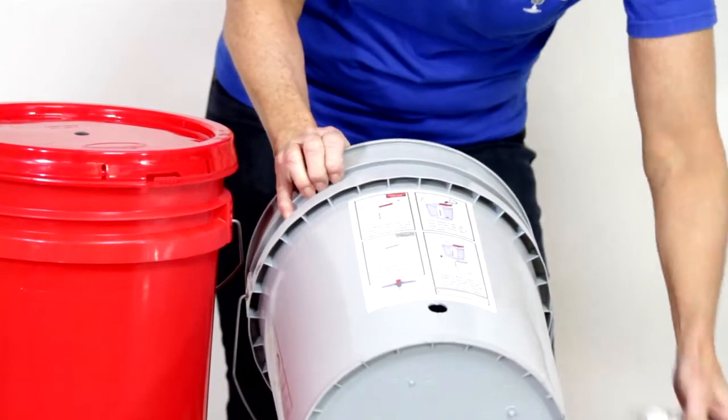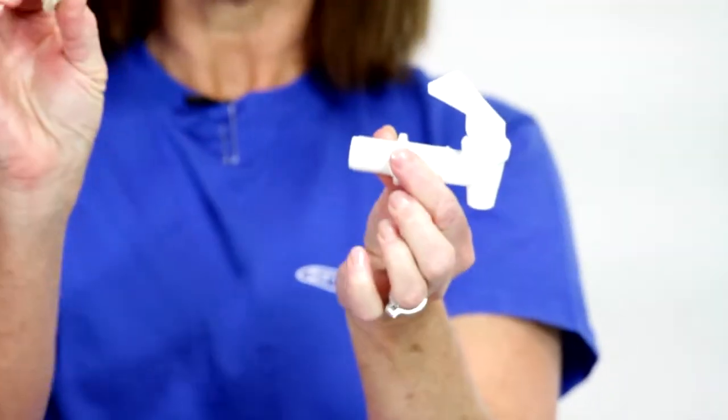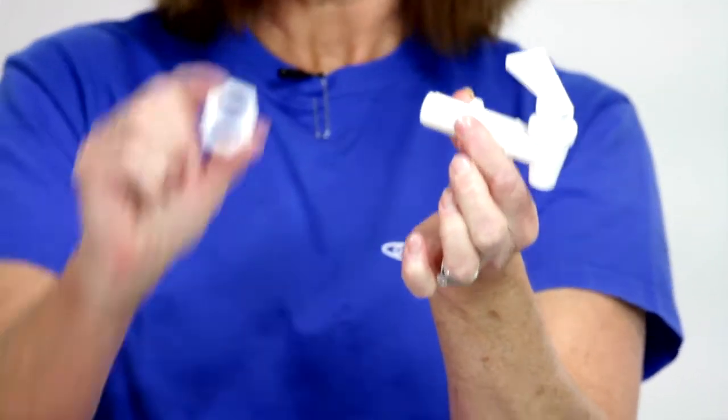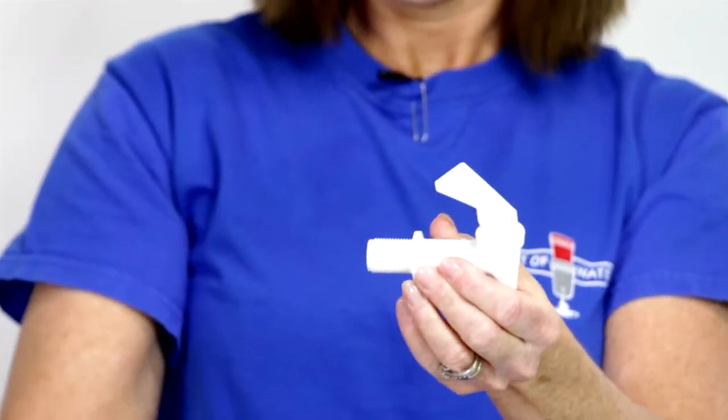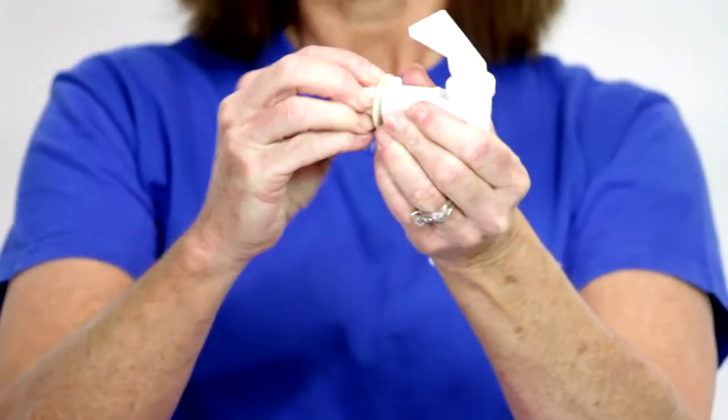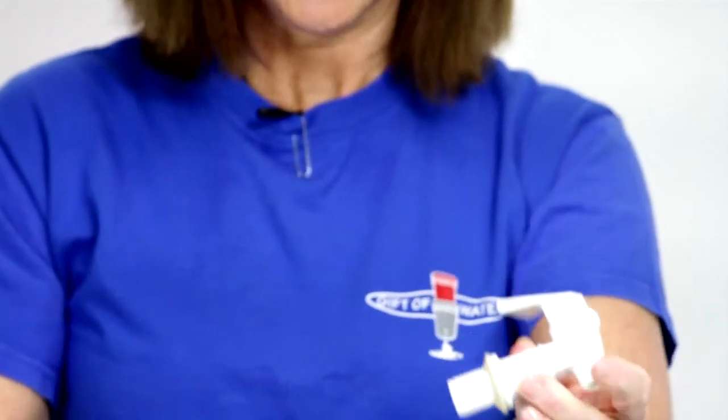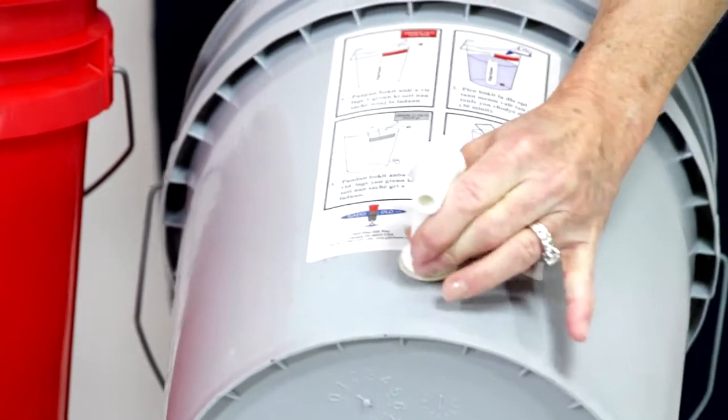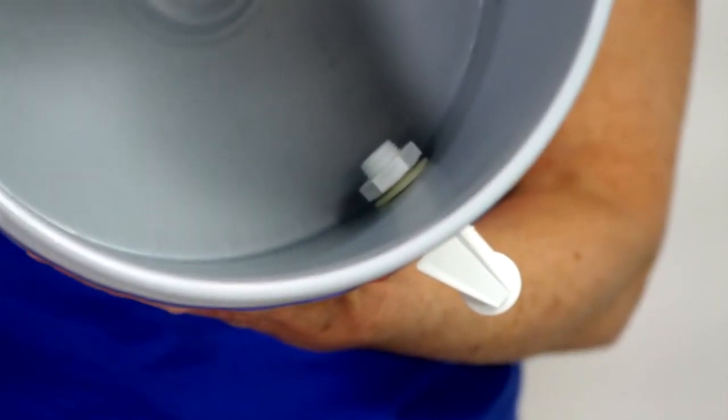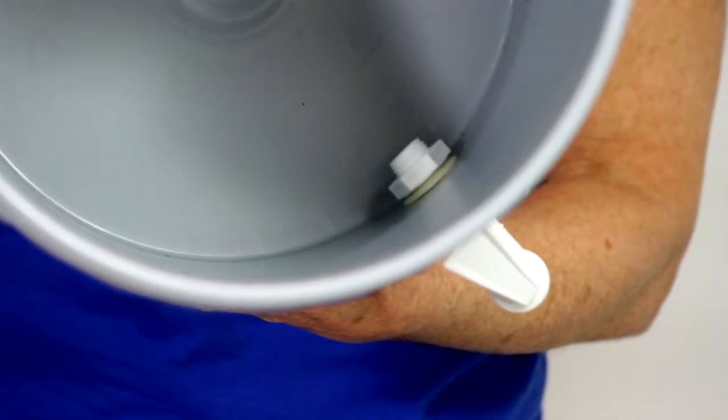Next, we're going to open up our spigot. It has two rubber washers and a plastic nut. We're going to attach one washer, put that into the hole, and then attach the other washer inside.